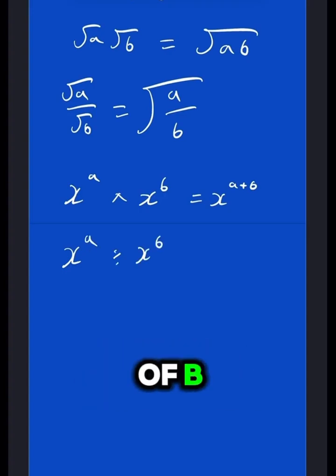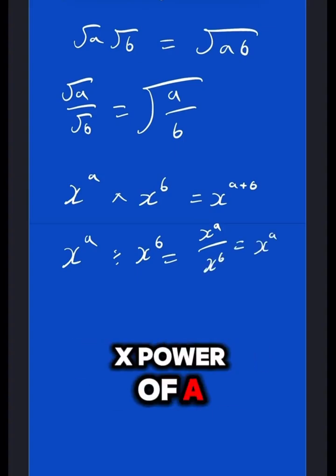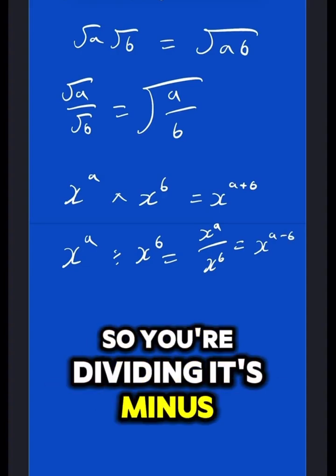Or, x to the power of a divided by x to the power of b, or it could also be written like this, x to the power of a over b. Then, that's going to be x to the power of a minus b. So, you're dividing, it's minus, it's times, it's plus.